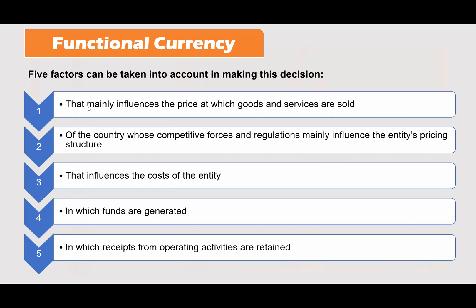There are five factors that can be taken into account when determining functional currency. The first criteria is the currency that mainly influences the price at which goods and services are sold — for Bangladesh, that would be BDT. The second criteria is the country whose competitive forces and regulations mainly influence the entity's pricing structure. The third is the currency that mainly influences costs, including raw material imports.